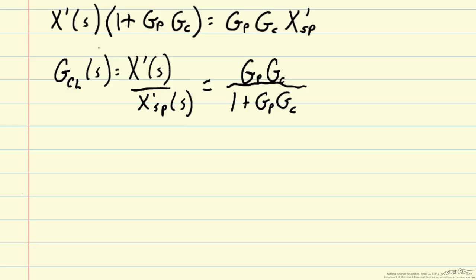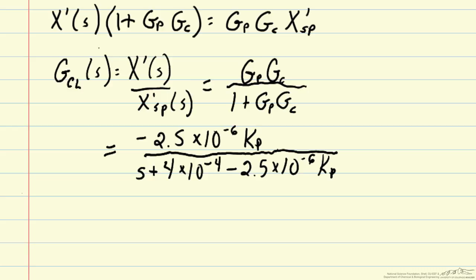And finally, we can go ahead and plug in the expressions for gp and gc for the blending process. And when we do that, we get negative 2.5 times 10 to the minus 6 times kp. kp was in gc, a controller transfer function. And then we can divide by 1 plus gp gc. So if we multiply top and bottom at the same time by the denominator of our process transfer function, we can get this simplified expression. So this is our closed loop transfer function for the blending process.